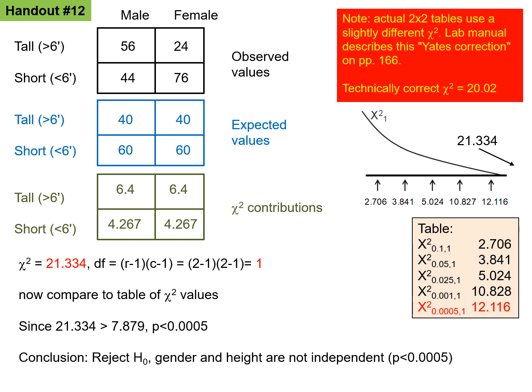As I mentioned in the video, but I'll reiterate here, actual two by two tables use a slightly different chi-squared value. That's the Yates correction. The technically correct chi-squared value would be about 20. And in fact, there's another technique or procedure used for two by two tables called the odds ratio that we'll talk about in the next lecture.